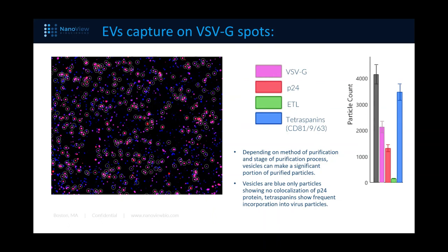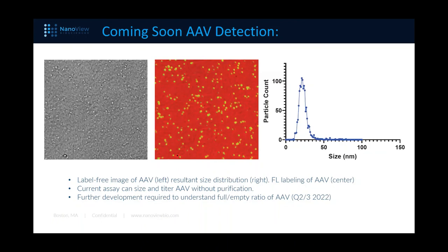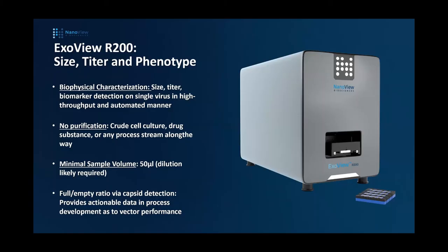Coming soon: AAV detection. Same method, same chips, same reader — the label-free interferometric imaging will be able to sense particles down to 20 nanometers and give results as size distribution. Fluorescent labeling works the same as for other particles. The current assay can provide size distribution and count of those particles based on surface staining without purification. Further development is required to understand the full and empty ratio by other staining or detection methods, and that's due out later this year.